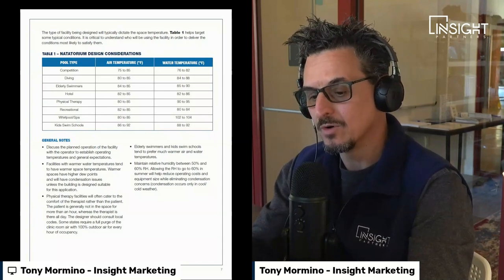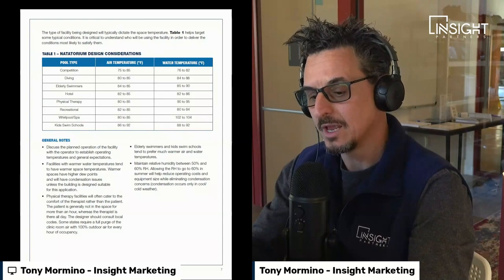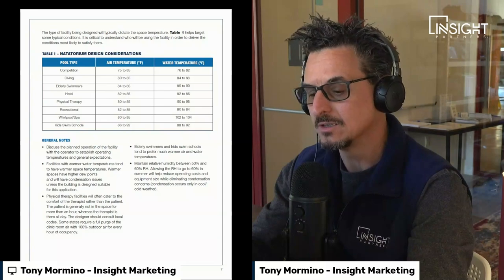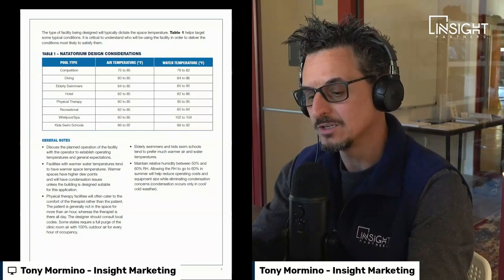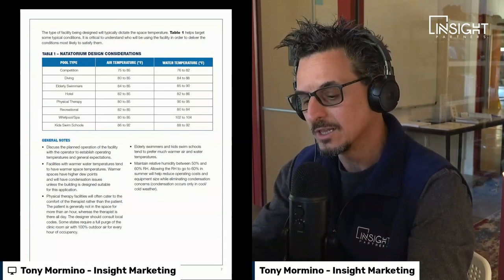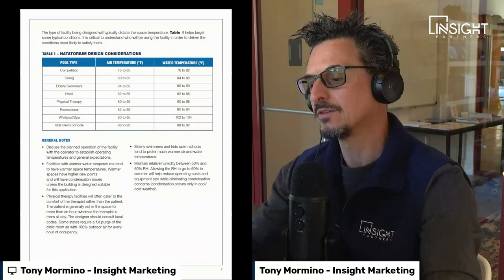Some general notes: first, discuss the planned operation of the facility with the operator to establish operating temperatures and general expectations. Second, facilities with warmer water temperatures tend to have warmer space temperatures — warmer spaces have higher dew points and will have condensation issues unless the building is designed suitably. Third, physical therapy facilities often cater to the comfort of the therapist rather than the patient, since the patient is generally not in the space for more than an hour whereas the therapist is there all day. Designers should also consult local codes — some states require a full purge with 100% outdoor air for every hour of occupancy.